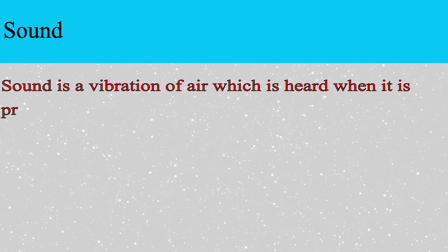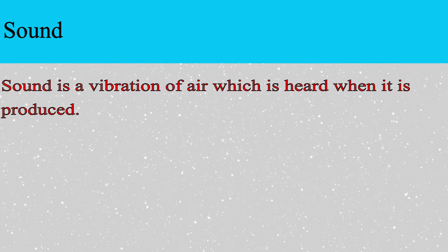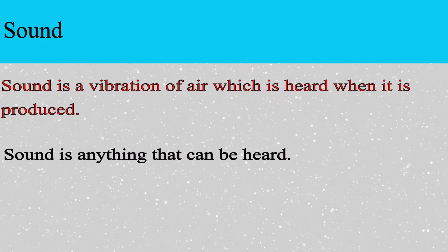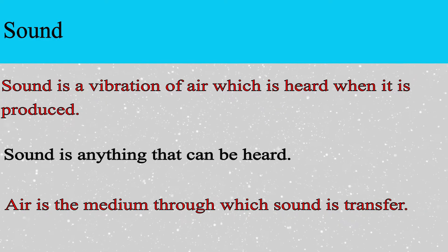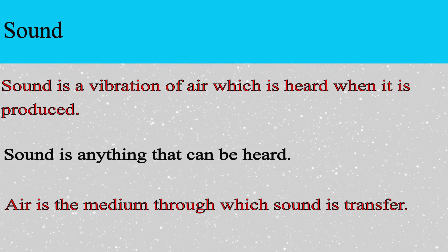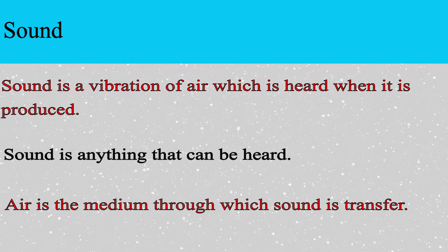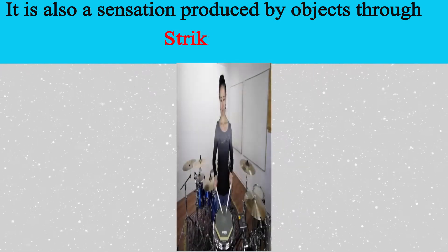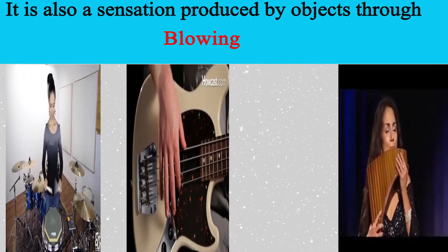Sound is the vibration of the air which is heard when it is produced. Or we say sound is the sensation of the brain which depends on our sense of hearing. It is also a sensation produced by objects through striking, plucking, and blowing.